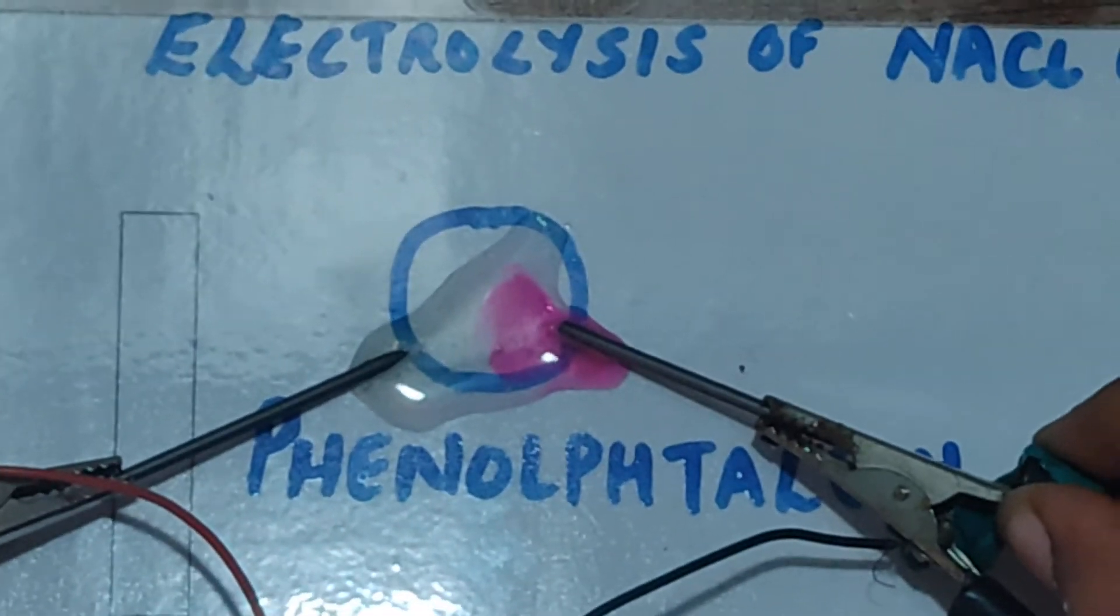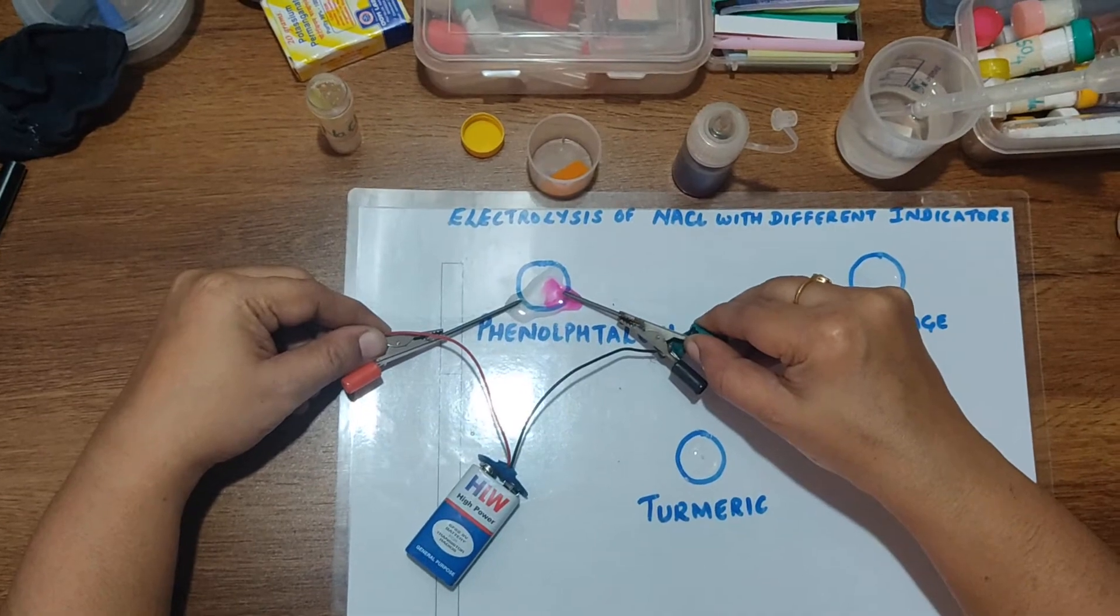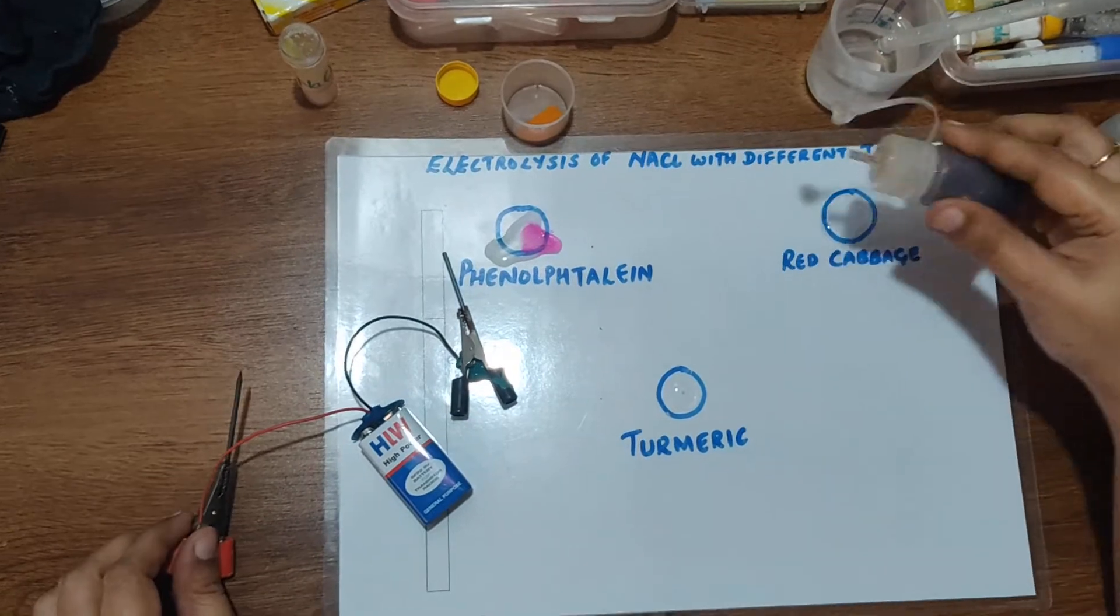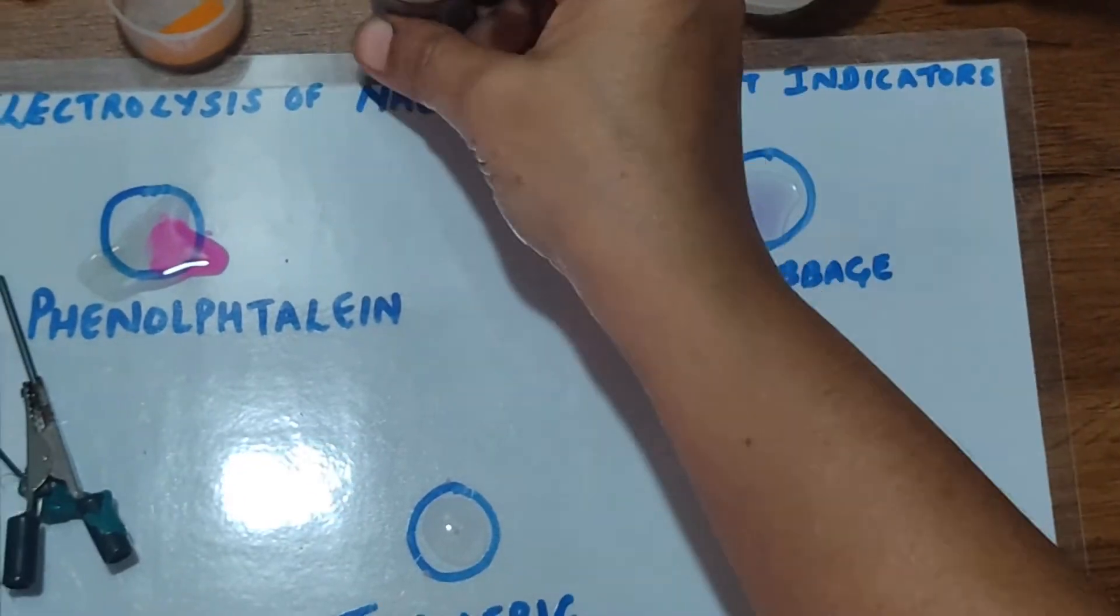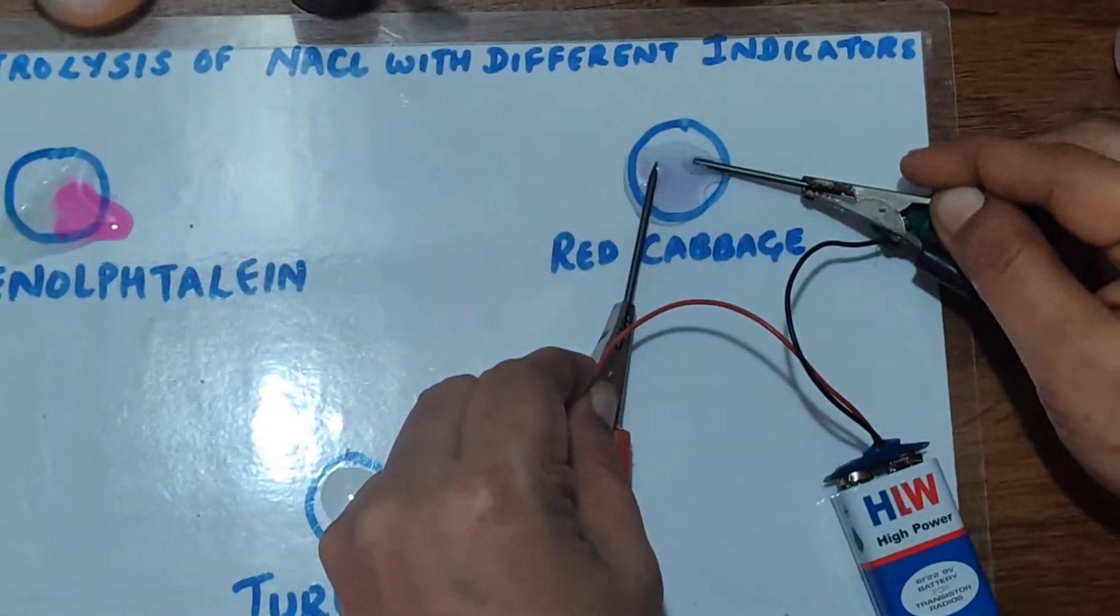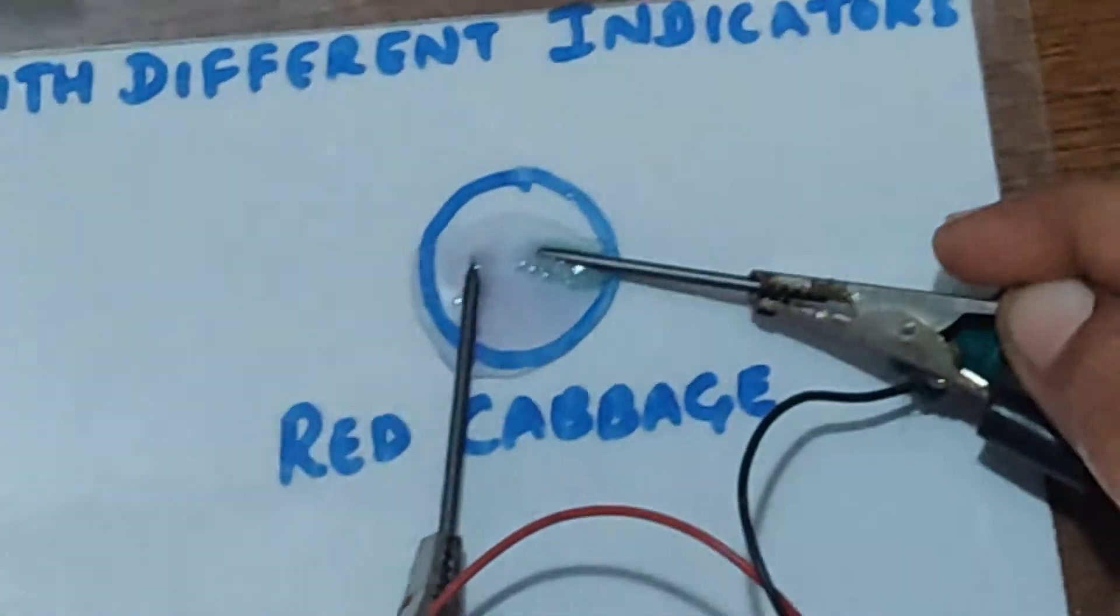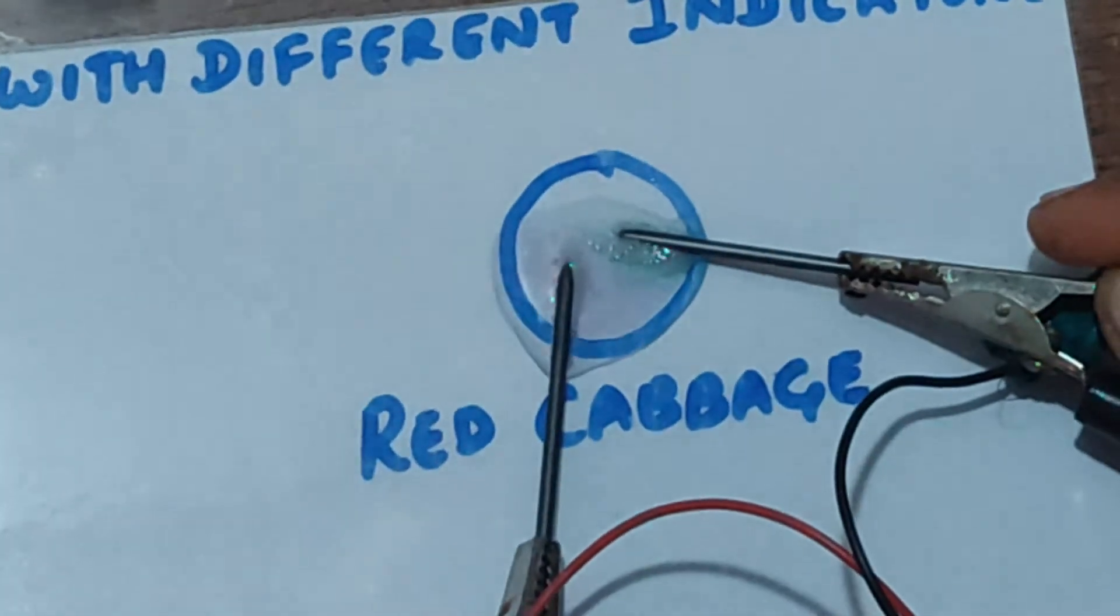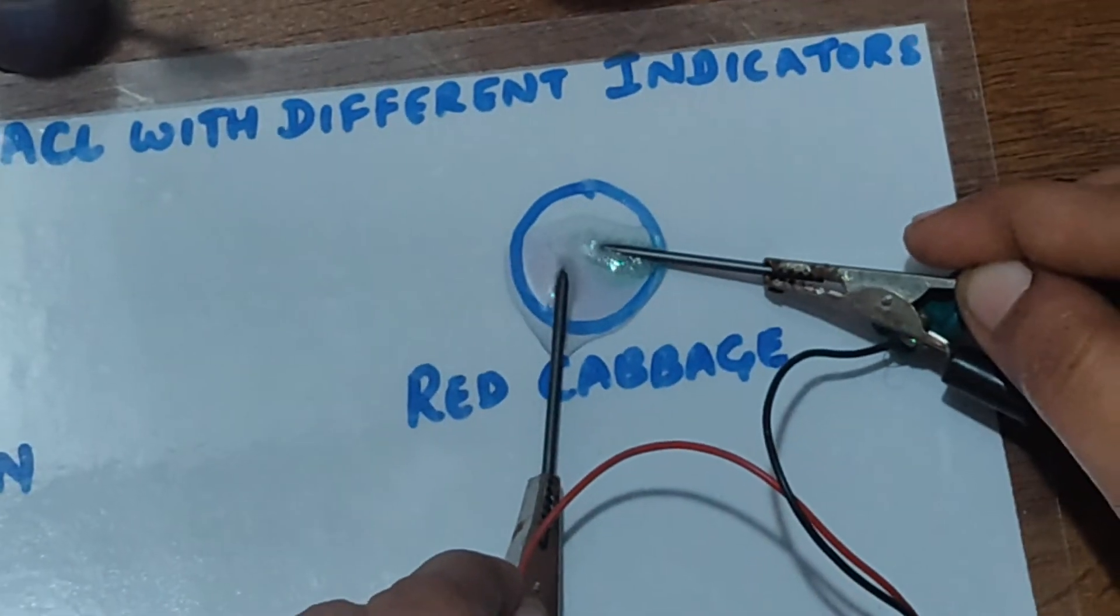Now let us see the reaction that takes place when I add red cabbage indicator. Let me add a drop of red cabbage indicator. You can see at the negative electrode a bluish green color and slightly pink at the positive electrode. And the bubbles are clearly visible here.